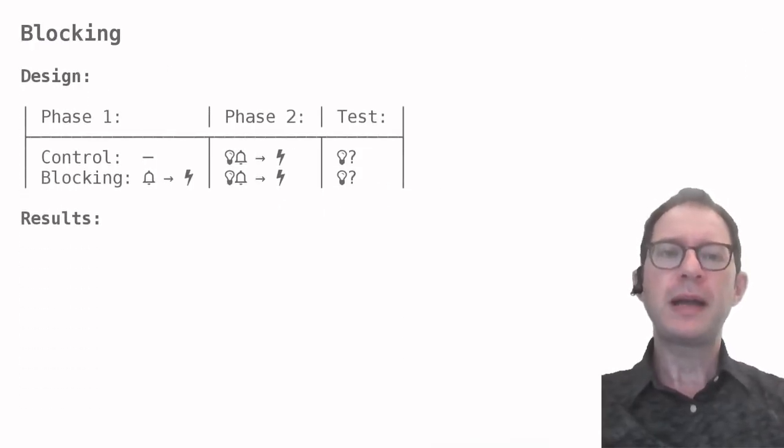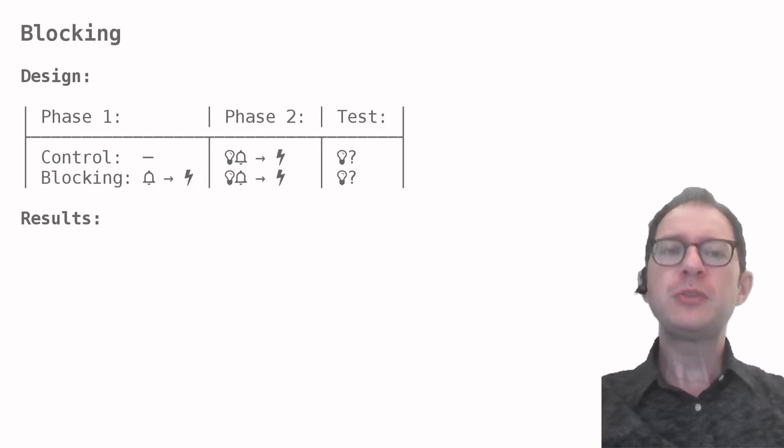All right, we are finally ready to talk about the blocking experiment. Here is the design of the original experiment performed by Leon Kamin in the 1960s, with two groups of rats as experimental subjects. We called the first group control and the second blocking. The original design included a couple more groups, but this is not important right now.